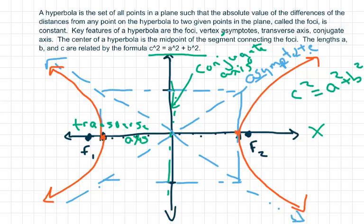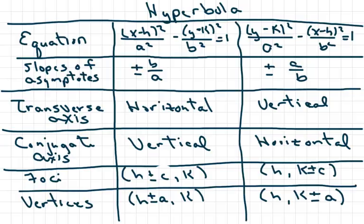We're going to do three examples where the center is (0, 0). The equation is a lot like the ellipse except it has a negative instead of a plus — we're just splitting the ellipse open. We'll talk about the slopes of the asymptotes; slope is y over x, and here it's plus or minus y over x.